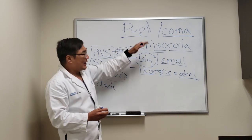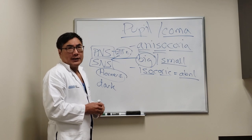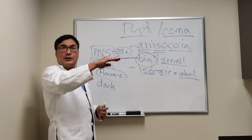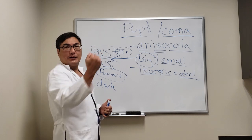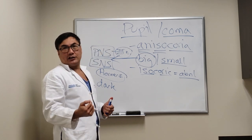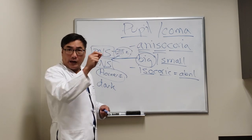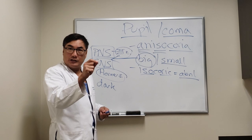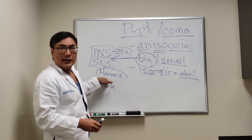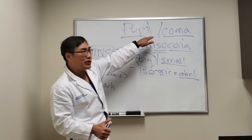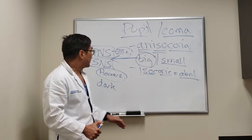Patients who have Horner syndrome and are comatose have a lesion somewhere disrupting that sympathetic pathway all the way from the hypothalamus down to the spinal cord, but usually that means they have a brainstem lesion. A unilateral or bilateral Horner syndrome can occur in comatose patients with a structural lesion.